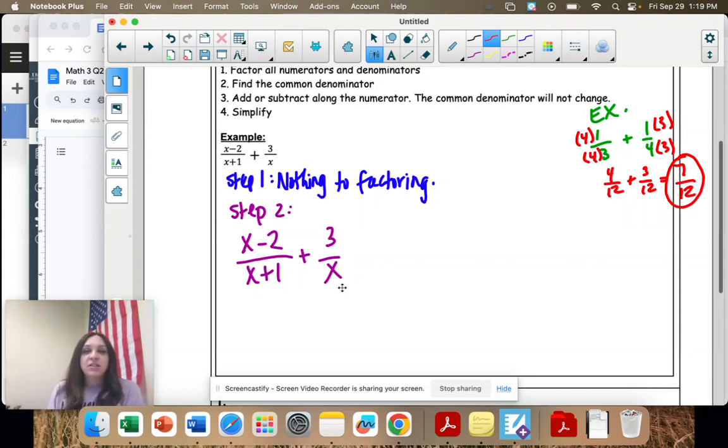It's the same concept. That x+1, I'm going to multiply by x because that's what's on the other side. What you do to the bottom, you have to do to the top. And then this x, I'm going to multiply by x+1 because that's what's on the other fraction. Now I'm going to simplify this up a little bit.